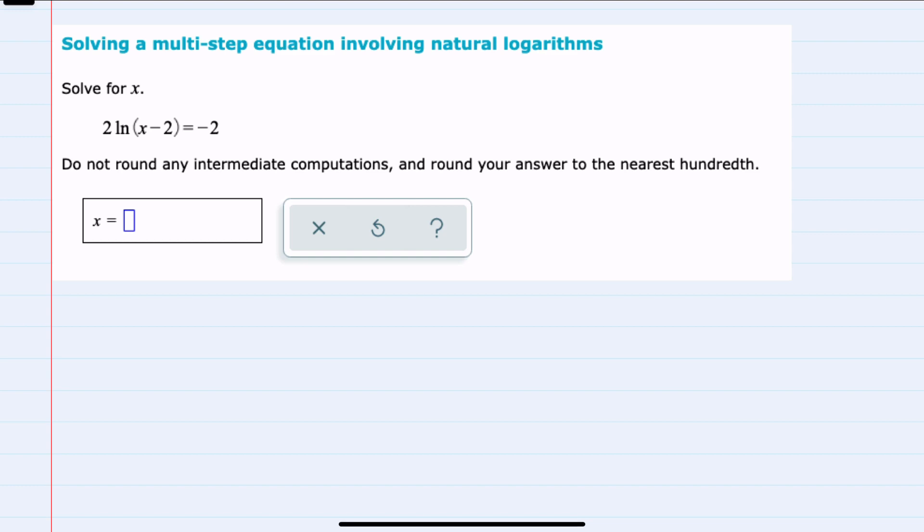We're asked here to solve for x, and I can start by isolating the logarithm by dividing both sides of the equation by 2. This would cancel that 2 coefficient, leaving just the natural log of x minus 2 equal to negative 1.